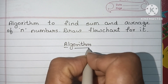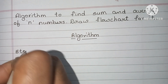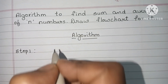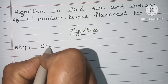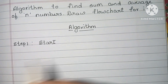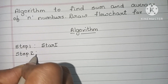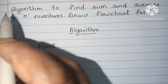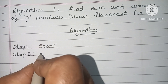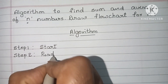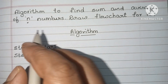An algorithm is a step-by-step process to solve a problem. Step 1: an algorithm always starts with a start statement, so first we have to write the start statement. Step 2: here we have to find sum and average of n numbers, so we have to read n — the number of integers, where n represents the count of numbers.